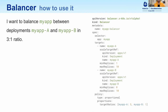API version balancer.x-k8s.io/v1alpha1, kind Balancer. This balancer defines two targets which are deployments called my-app-A and my-app-B. We can define min and max replicas for each target. And lastly we define the policy — in this case a proportional policy with ratios three and one. With this config, if the balancer controller detects that the number of replicas in deployments is no longer in proportions of 3 to 1, it will redistribute pods to bring back the desired ratio. Also, when the scale on the balancer object changes, so pods are to be added or removed, the balancer controller will add or remove them from the right deployments in order to maintain the 3 to 1 ratio.